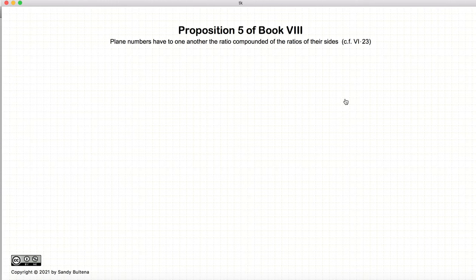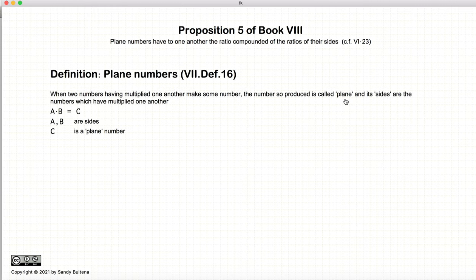Before I begin describing what the proposition is about, we have a couple of definitions that we need to go over. The first definition are plane numbers, and what that means is if we have two numbers A and B that multiplied together give us a third number C, then A and B are referred to as the sides of the number C, and C is referred to as a plane number.